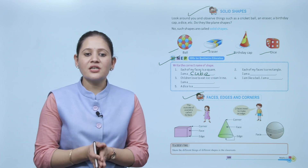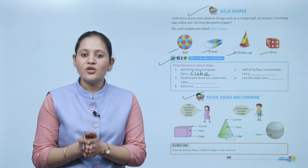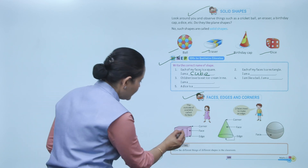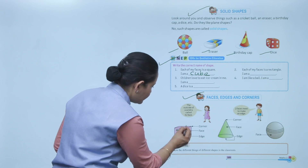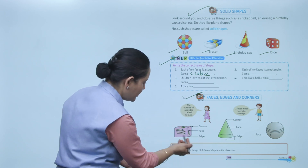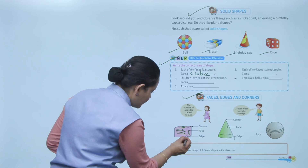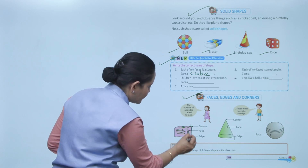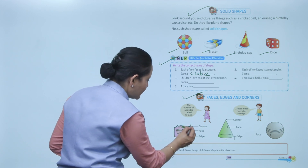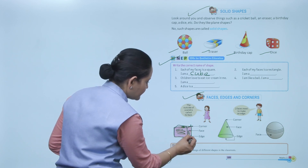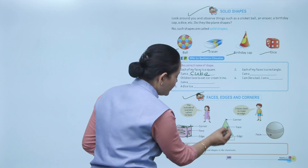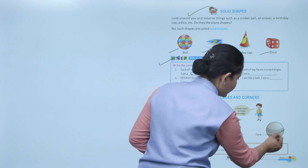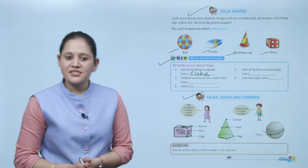The outside of the solid is called the face. Two faces meet to make an edge. Here these are the faces, these are the edges, and these are the corners. It's a corner, it's a face, and this is an edge. Here it is a curved face.